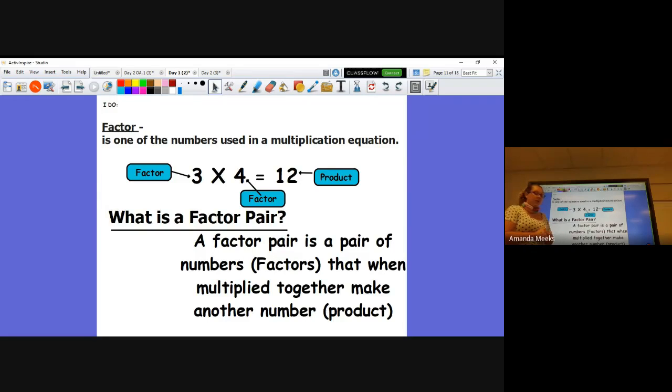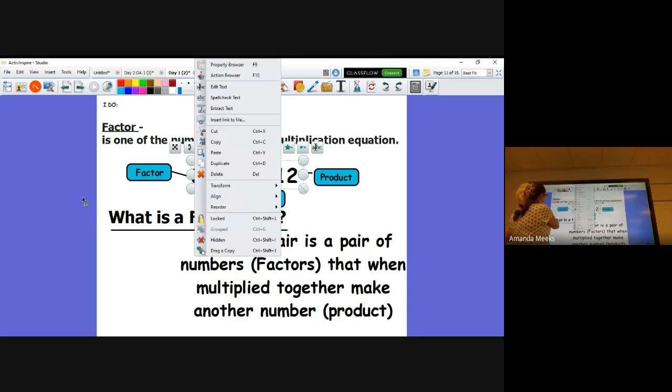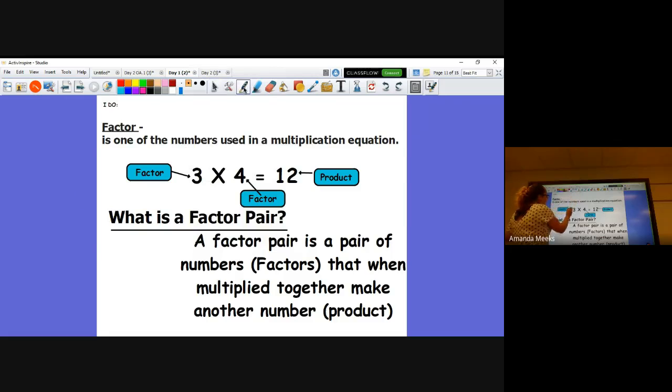Right here, 3 is a factor, 4 is a factor. But if you hear the word factor pair, that means you're talking about two numbers you multiply to get a product. So the factor pair for 3 times 4 would be 3 and 4. This is your factor pair.